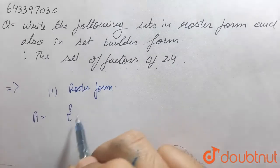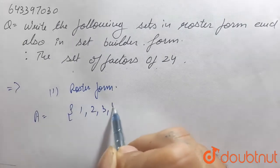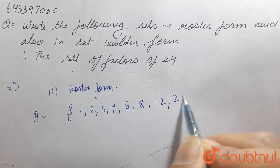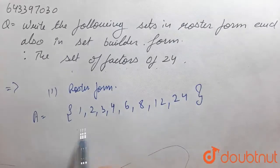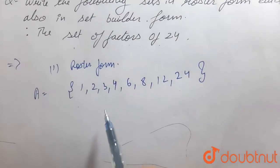So, the roaster form is 1, 2, 3, 4, 6, 8, 12 and 24. This is the roaster form of set of factors of 24.